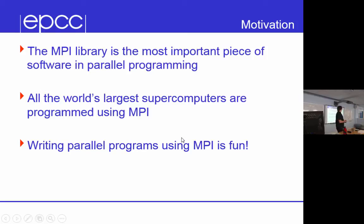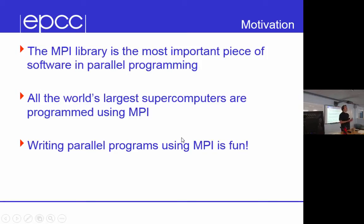Why do we give this course? The MPI library is the most important piece of software in parallel programming. Virtually all of the cycles on the world's largest supercomputers are burned using programs that use MPI. It doesn't matter if you use OpenMP — you use MPI. It doesn't matter if you use GPUs — you use MPI. It doesn't matter if you use Xeon Phi accelerators — you're using MPI. There are alternative models coming through now, like PGAS languages, but they're very much in their infancy. So you have to know MPI to use large supercomputers.